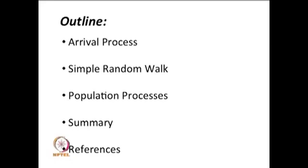In this lecture, we are going to discuss some simple stochastic processes, starting with the discrete time arrival process that is a Bernoulli process, and a continuous time arrival process that is a Poisson process. Followed by that, we are going to discuss the simple random walk, then a simple population process which arises in the branching process. Then we are going to discuss the Gaussian process, so with that lecture 2 will be over.